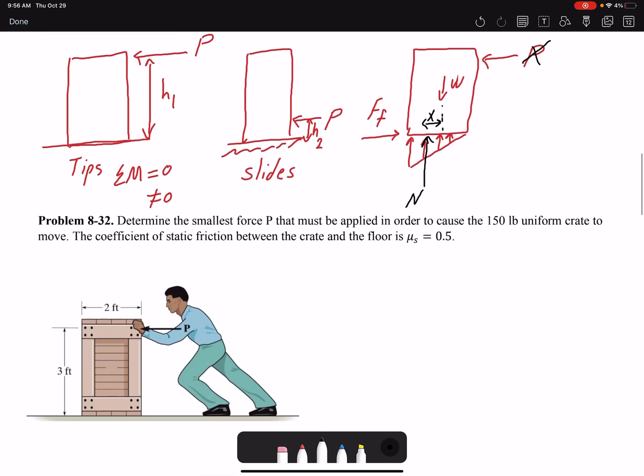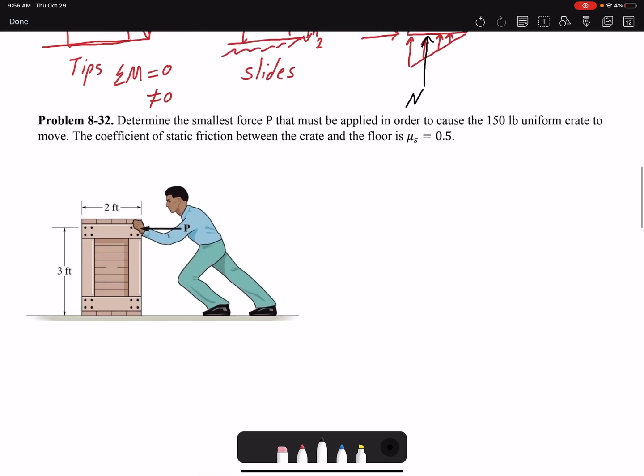Now let's look at the problem. Problem 8-32: Determine the smallest force P that must be applied in order to cause the 150 pound uniform crate to move. So here we are saying to move, so it could either slide or flip.